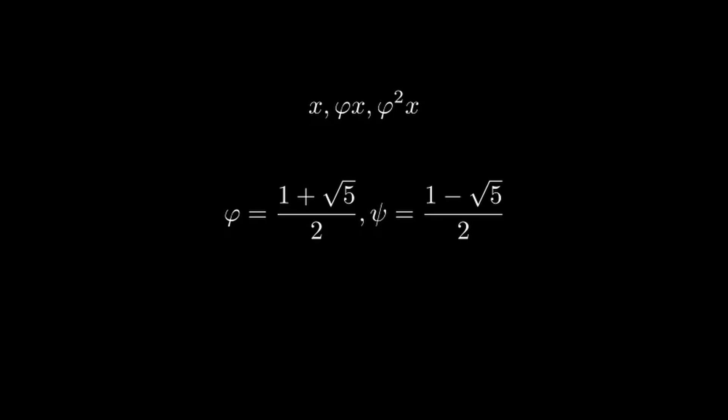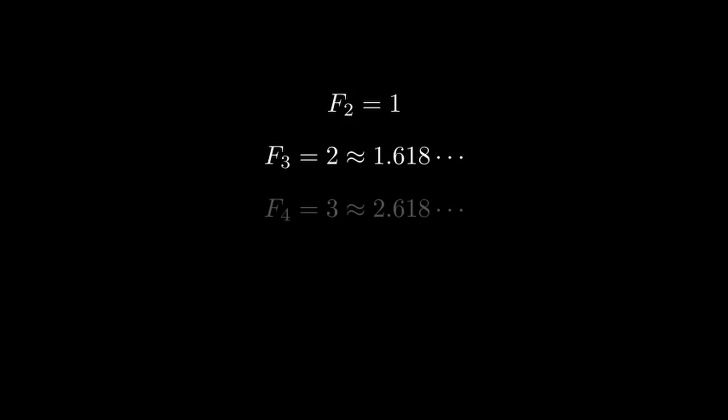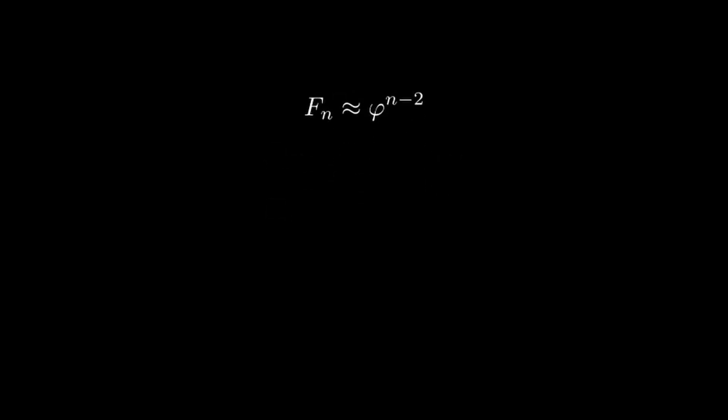Since we can approximate Fibonacci numbers by multiplying by phi, naively, we might try to approximate the nth Fibonacci number by powers of phi. F2 is 1, so F3 is approximately phi, and F4 is approximately phi squared, and so on. This reveals the approximation Fn is approximately phi to the n minus 2.